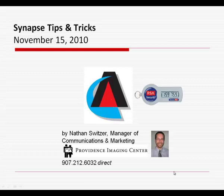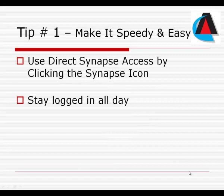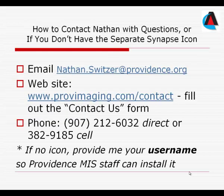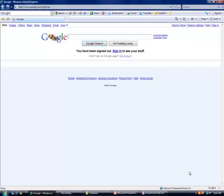In lesson one we'll make sure you have a separate Synapse icon on your remote access desktop. If you don't have it you'll know whom to contact. Secondly we'll demonstrate how to keep Synapse available all day long on your office PC. Lastly we'll demonstrate how Synapse can remember your search terms, which will make it much more user-friendly. To learn more about this training go to our website at Provimaging.com or contact Nathan Switzer at 212-6032.